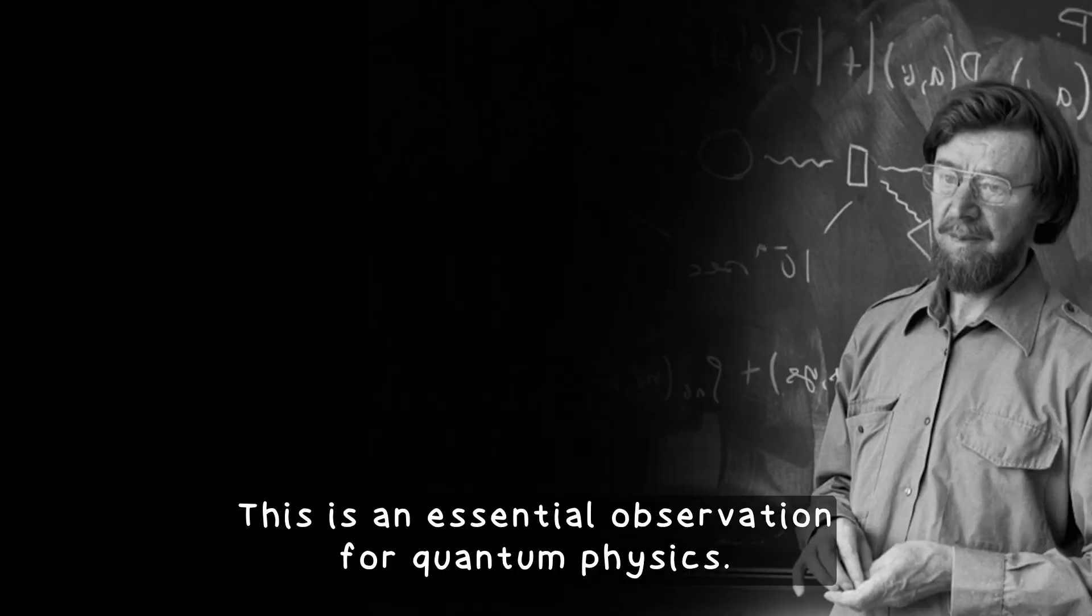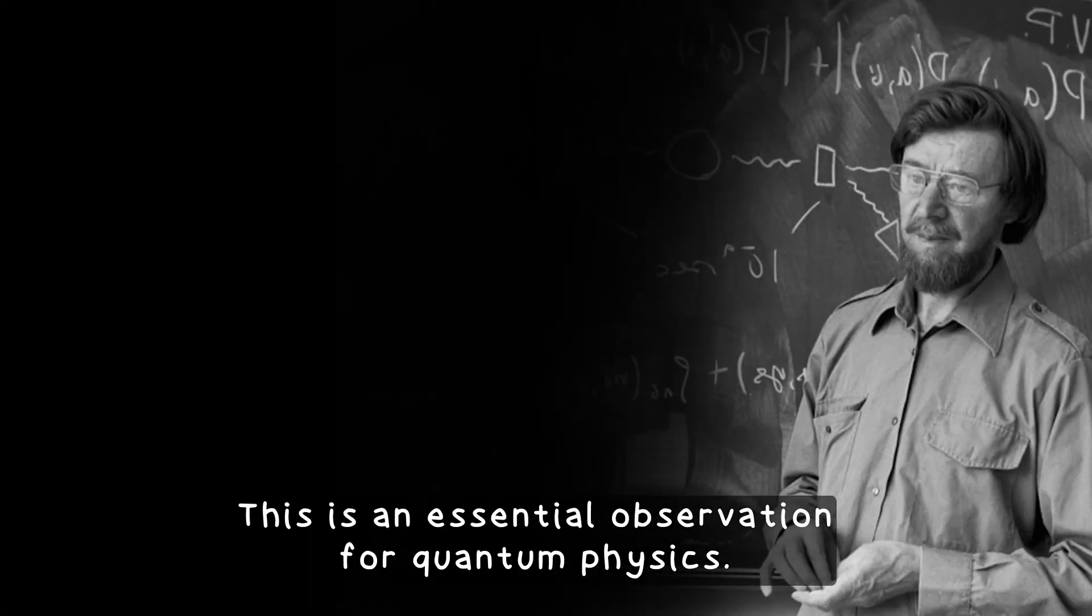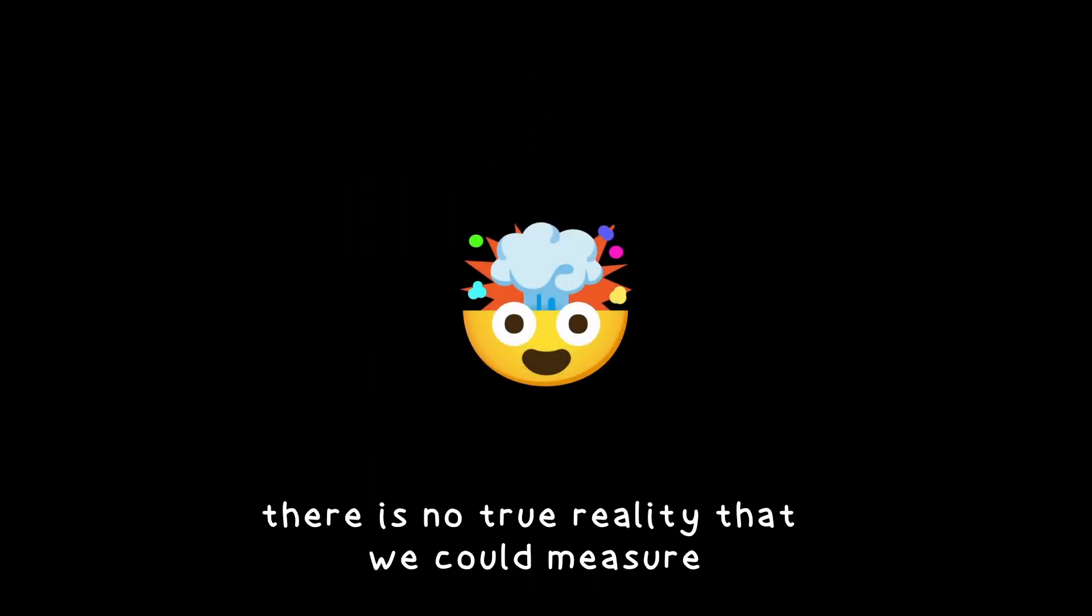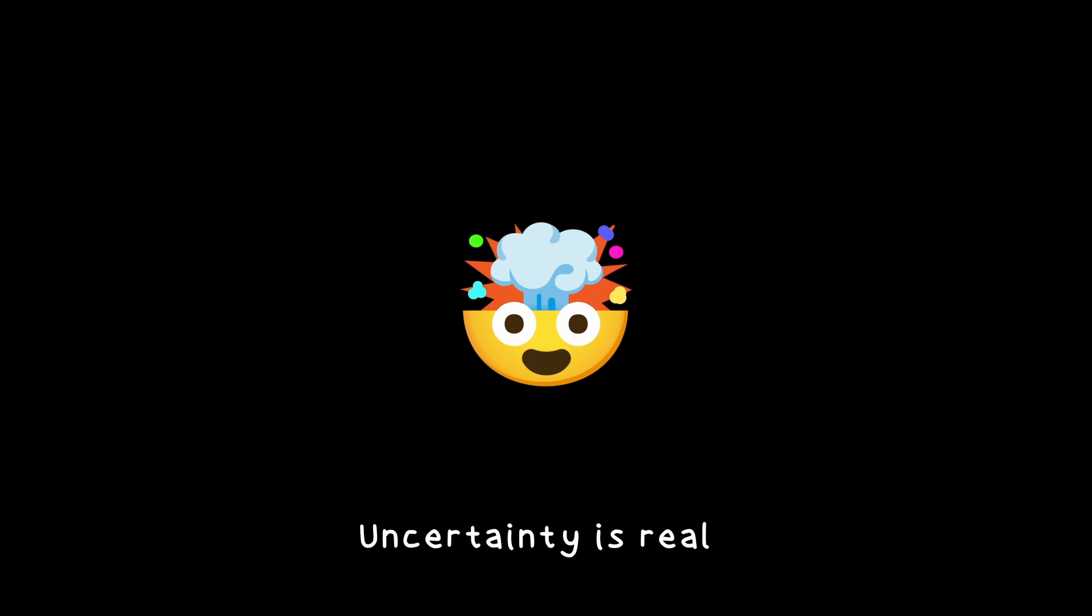This is an essential information for quantum physics that doesn't solve everything, but it states one more time that there is no true reality that we could measure if we knew everything about it. Uncertainty is real, quantum entanglement is real, and it is not due to some knowledge we don't have about the particles.